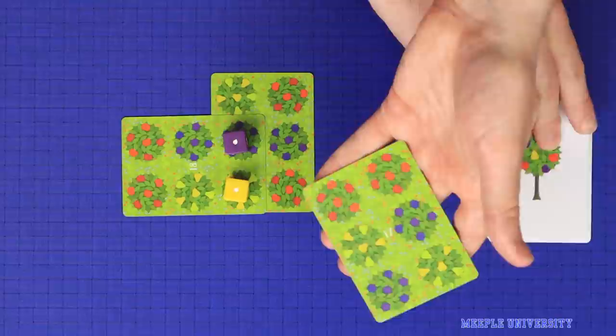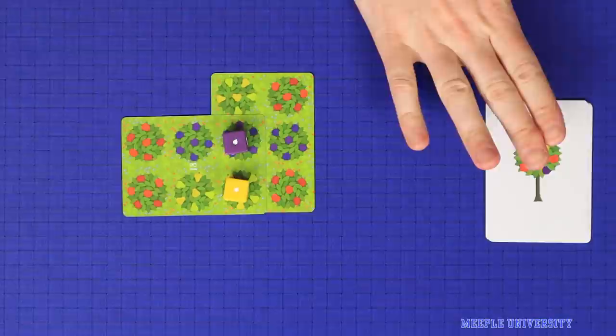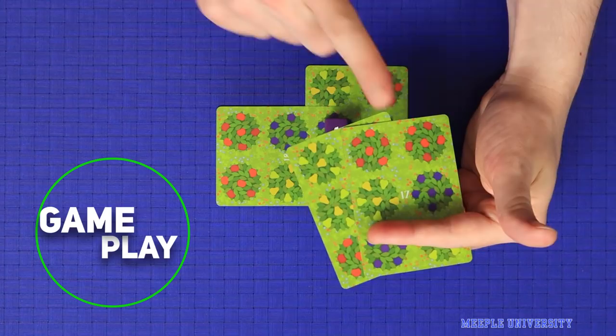You'll use dice to score any matching overlaps you make and then draw back up to 2 cards. Play continues in this manner until you've placed all 9 cards or can't legally place again.